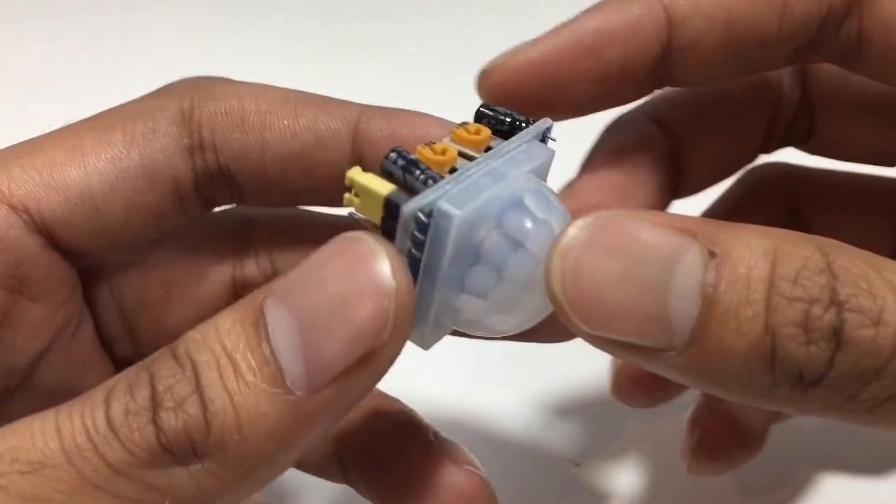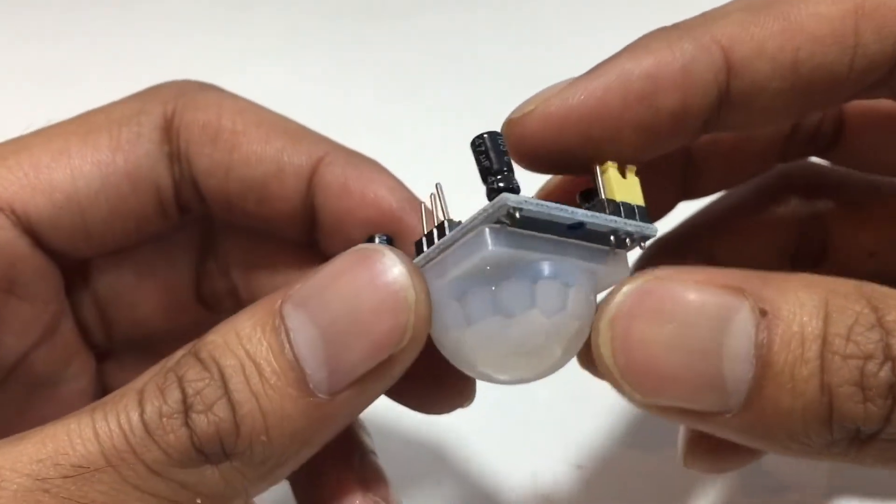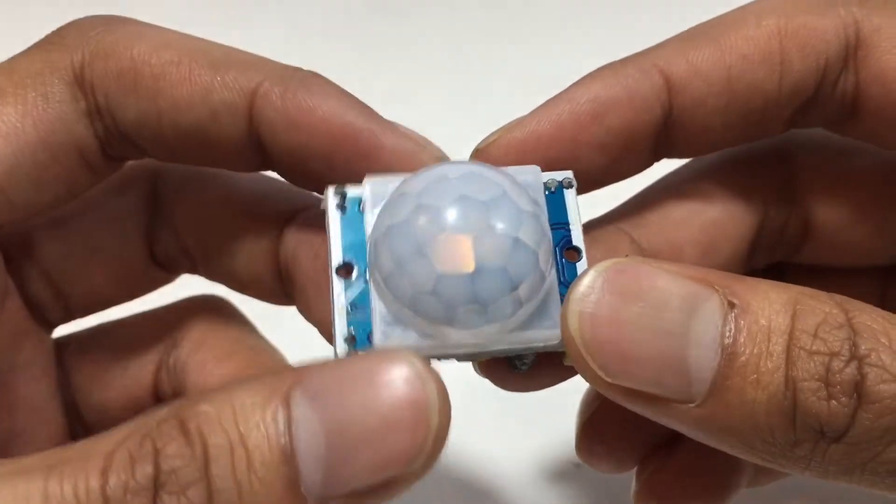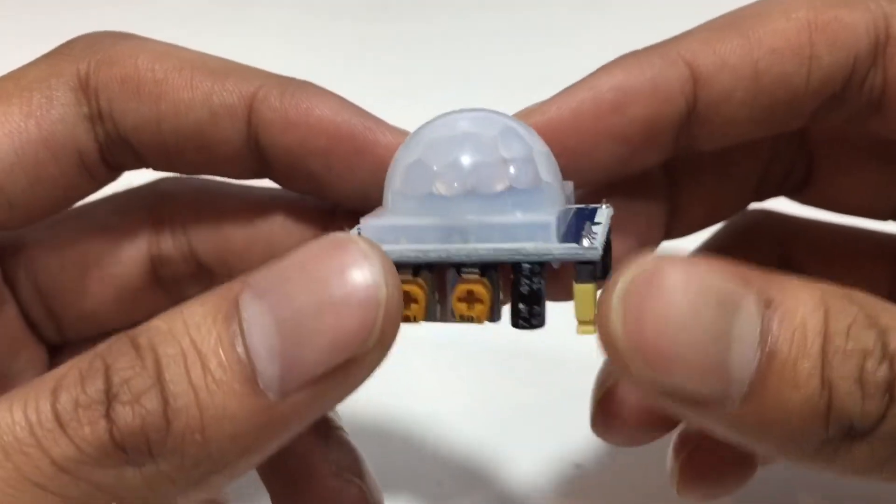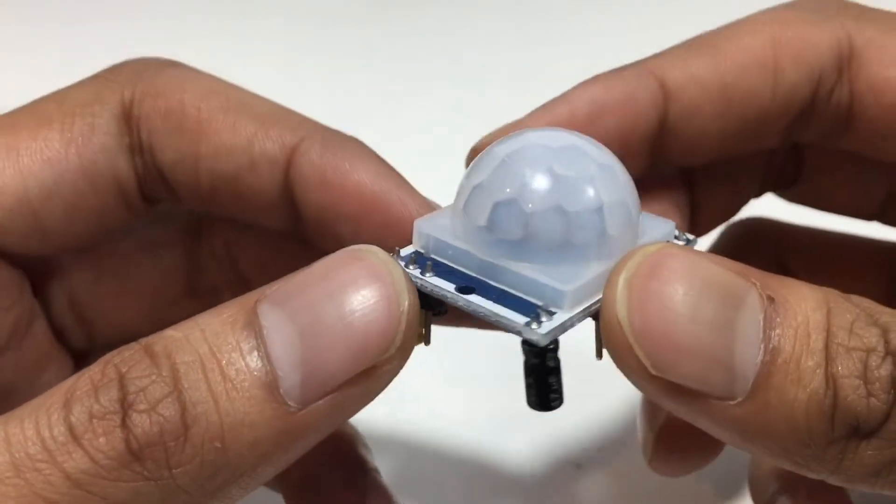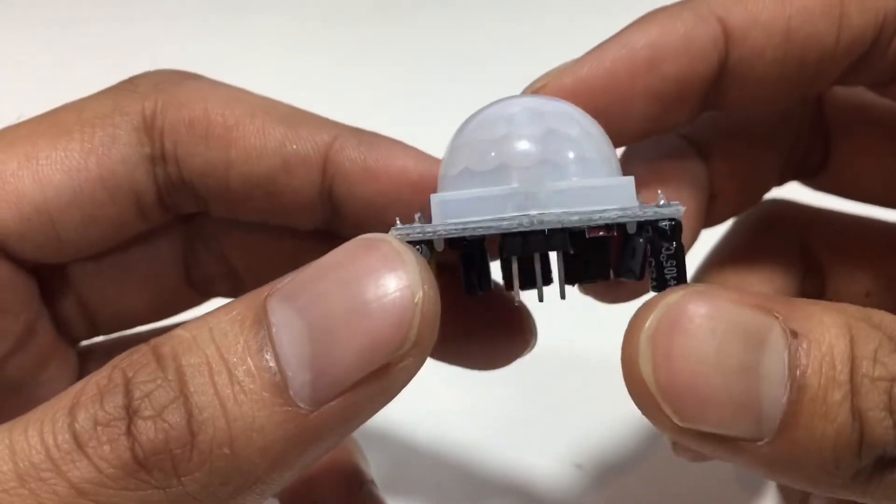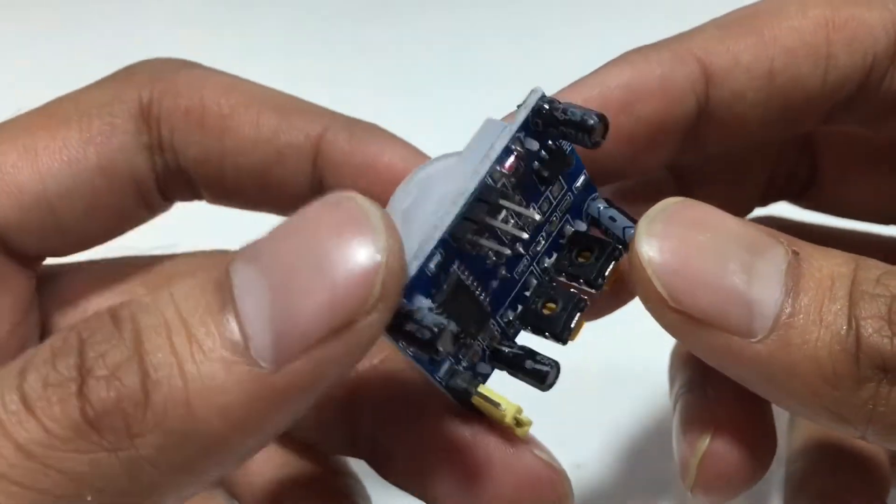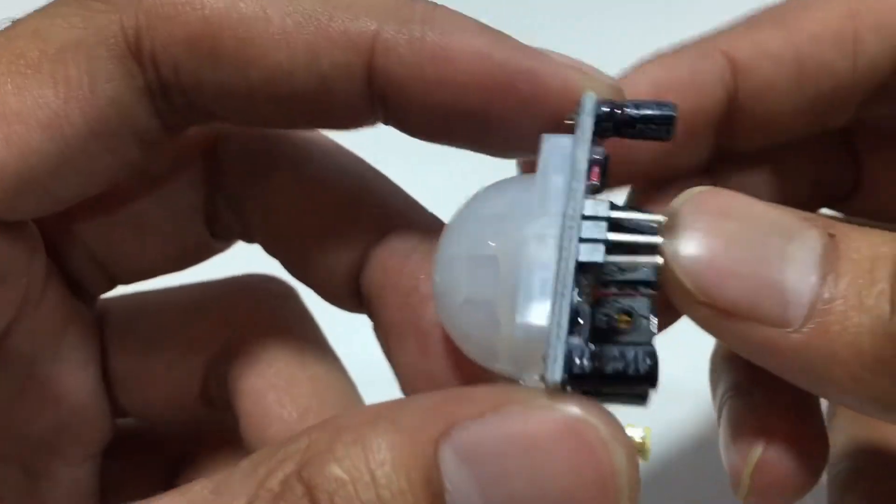Here is the PIR motion sensor, passive infrared motion sensor. PIR motion sensor allows you to sense motion. Almost always used to detect whether a human has moved in or out of the sensor range. They are small, less expensive, and easy to use. There are only 3 pins, you can see.